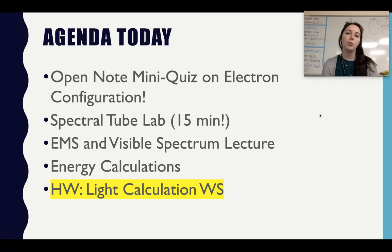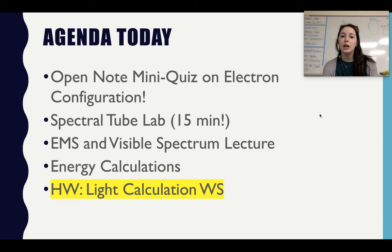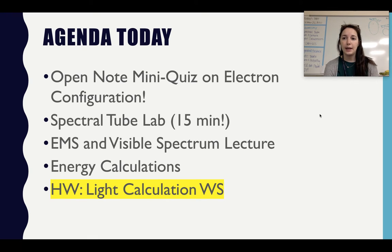The first thing you needed to complete was an open note mini quiz on electron configuration — it was very easy and it's on Canvas. Then we did the spectral tube lab, which took about 15 minutes. I went through a little bit of information beforehand, and I did record it in a separate YouTube video under spectral tube lab. After that, we'll go over a lecture and then energy calculations. I solved all the worksheet answers and posted keys for you. The light calculations are a little difficult, so I'm planning on not testing you too heavily on that — I'll talk more about it next week.